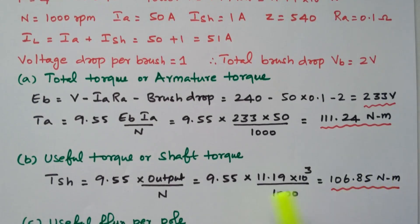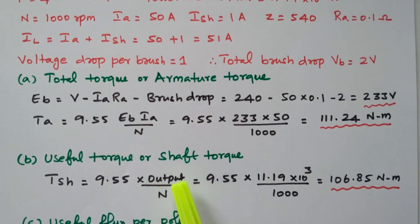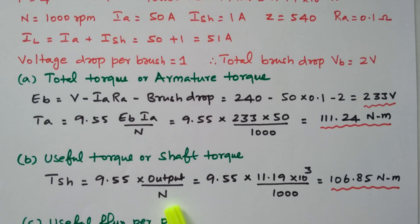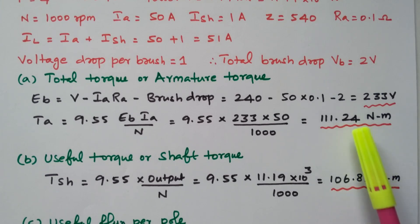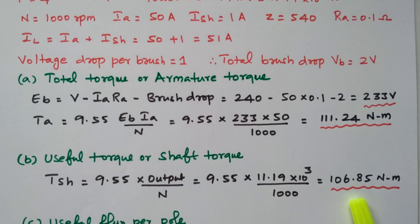Now we find the useful torque, or shaft torque. The torque developed in the armature has some losses; the remaining is available as shaft torque. The formula is T_shaft = 9.55 × output / N = 9.55 × 11.19 × 10³ / 1000 = 106.85 N·m. The shaft torque is less than the armature torque because of friction and windage losses.